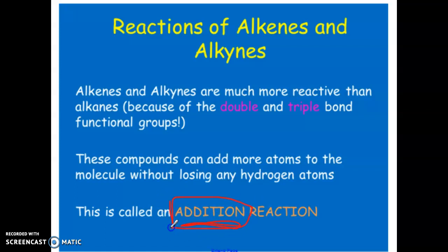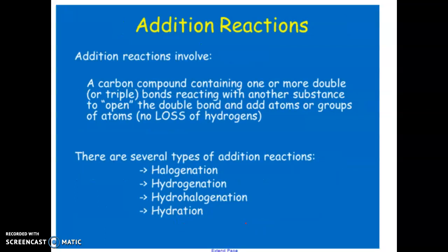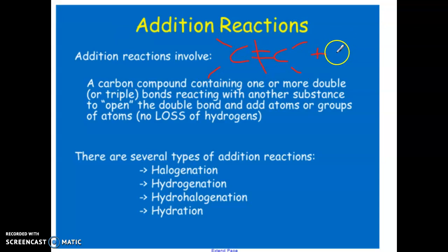Addition reactions are kind of like what they sound like — we're going to add atoms into our molecules. Anytime you're doing an addition reaction, your double bond is going to break. So if you have a carbon-carbon double bond, that bond will break, and you're going to add in atoms to fill the new bonds that are available. Remember that carbon needs to have four bonds, so when you break a bond, it now has the ability to bond with another atom. The type of atom added tells us which type of addition reaction we're doing.